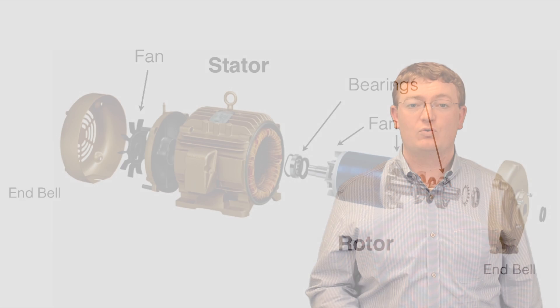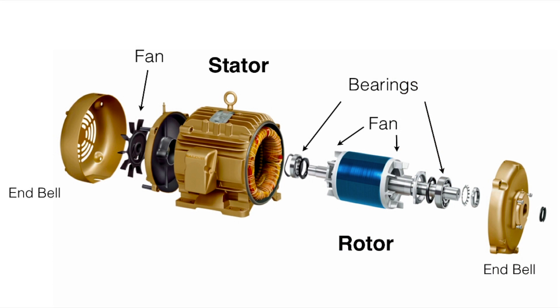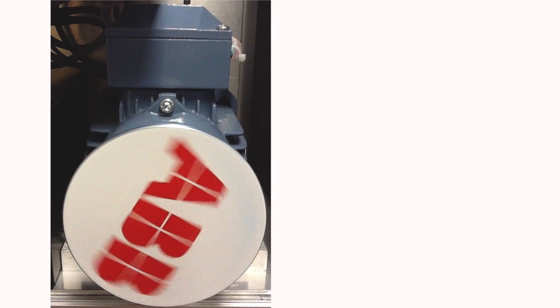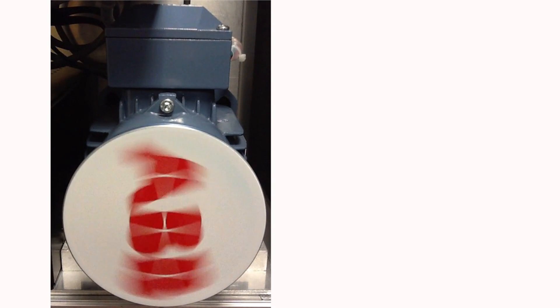Even further, flux optimization allows motors to be run at lower and lower frequencies. Generally, people set the lower limits of a drive to around 20Hz — in some cases even more. The reason for this was that as motors slow down, their ability to deliver air across the windings via the internal fan blades is reduced. Therefore, at those lower frequencies, motors would overheat. But because flux optimization takes the heat out of the windings of the motor, we can operate at those lower frequencies, so long as we don't stall the motor. We have consistently seen, when flux optimization is used, that motors can be driven down to 3Hz, saving even more money.